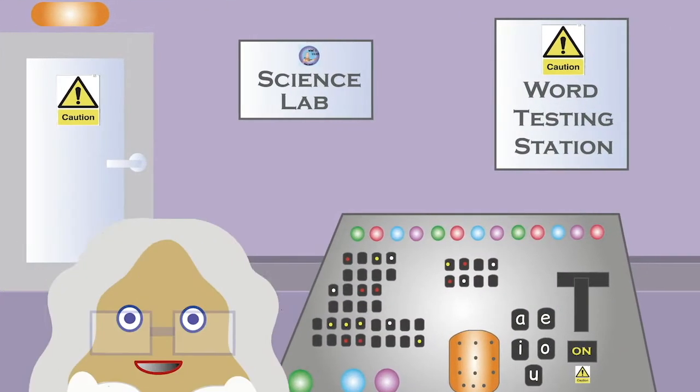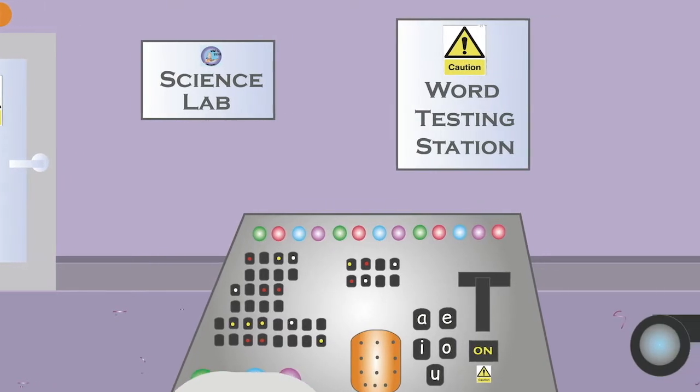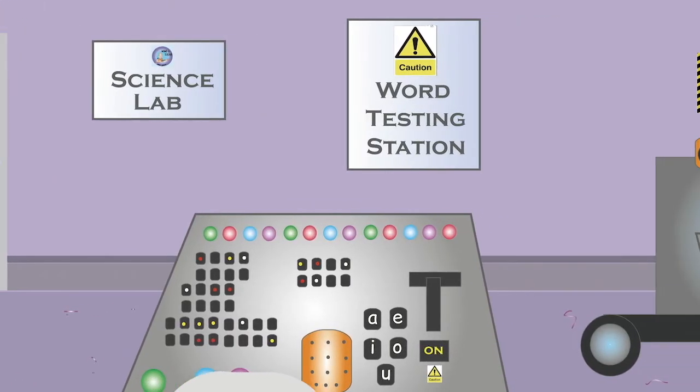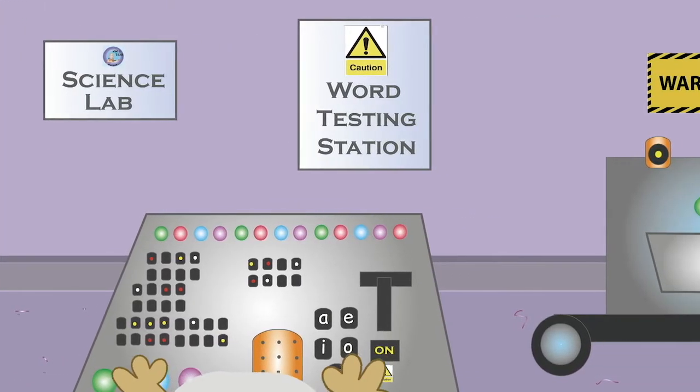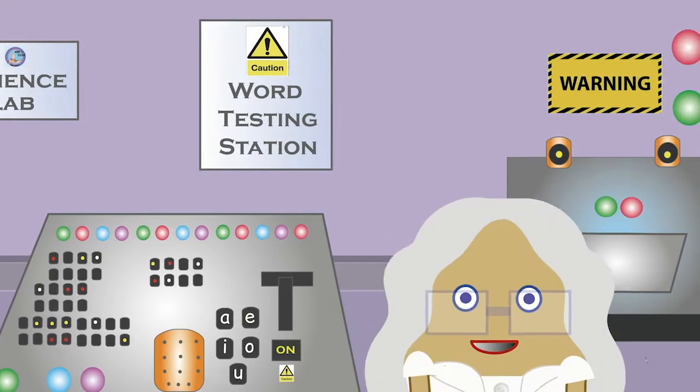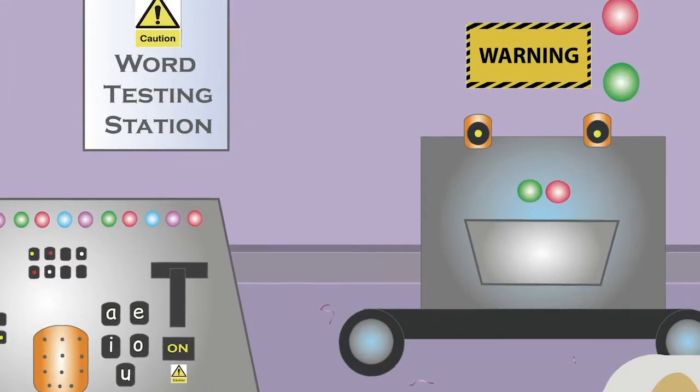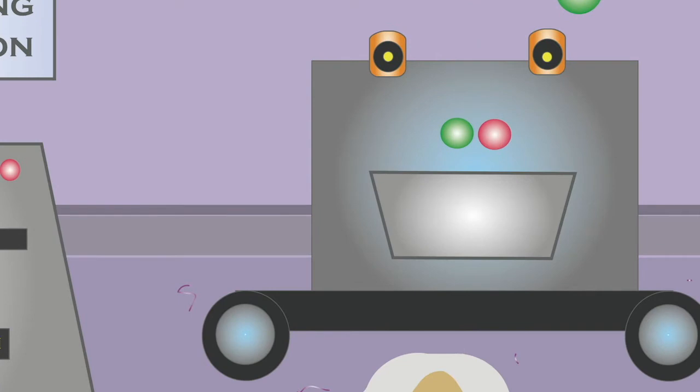This is my secret laboratory. I test many different words. Now today, I need your help. We are going to be focusing on four-letter rhyming words. But first, there's someone you need to meet. My word robot. I've almost finished him, but he does have some glitches.